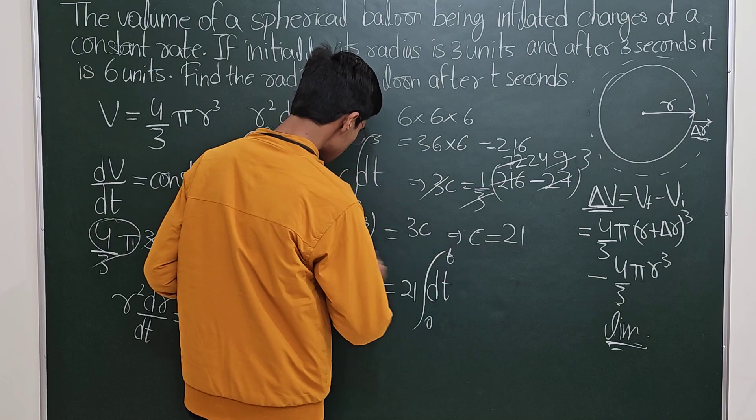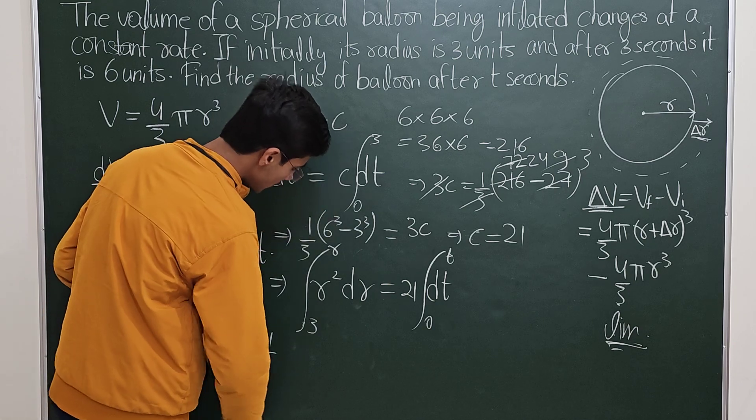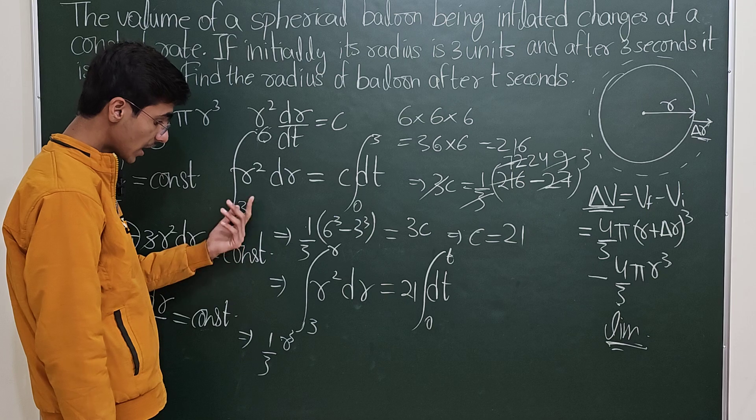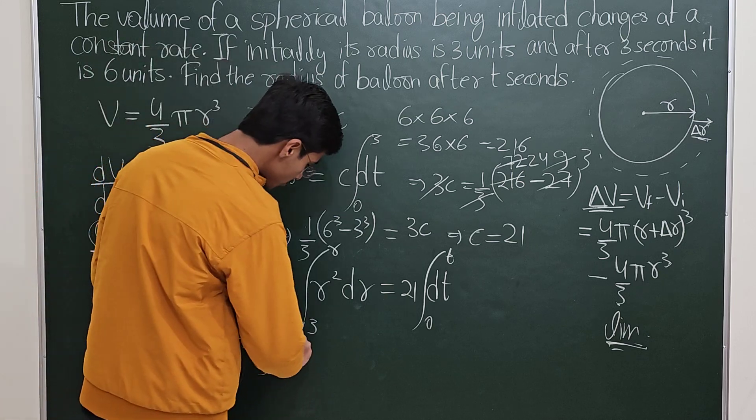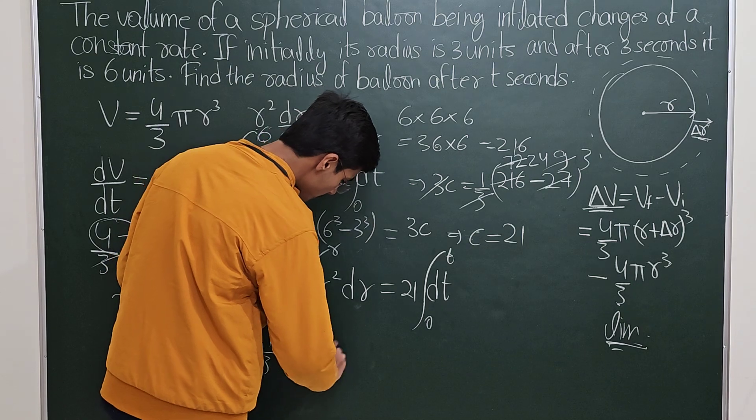Then you say that this is 1/3 r³, so you have 1/3 r³ minus now again 27, which should equal 21 times t.